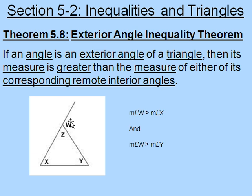So in this picture, angle W is the exterior angle, and angle Y and X are the remote interior angles. And all it says is that angle W will always be greater than angle X or angle Y.